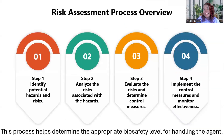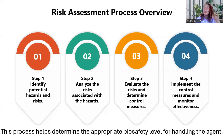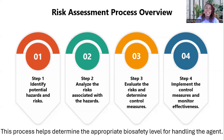What is the risk assessment process overview? Risk assessment is one of the most important parts of bio-risk management. The steps are: first, identify the potential hazards and risks; second, analyze the risks associated with those hazards; third, evaluate the risks and determine control measures; and then implement the control measures and monitor their effectiveness. This process helps identify what biosafety level an agent belongs to and how to handle it.